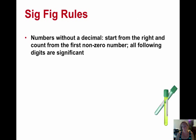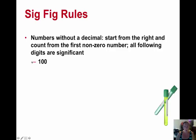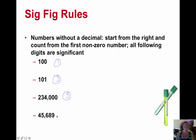Numbers without a decimal: if there's no decimal, we start from the right and count from the first non-zero number, and everything going to the left will be significant. For example, if we start from the right and hit the 1, this is the only significant figure — the two zeros are not significant, so just one significant figure. Coming from the right: 1, 2, 3 significant figures — the zeros between the two numbers count. No decimal, start from the right: these are zeros, we don't count them — 1, 2, 3: three significant figures. No decimal, start from the right: 1, 2, 3, 4, 5 significant figures.